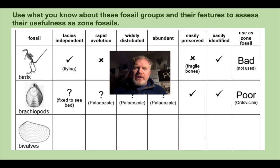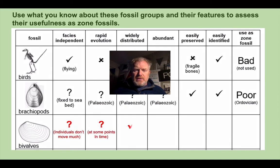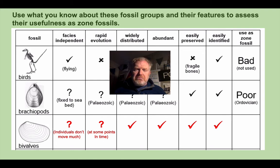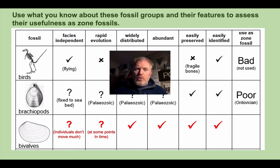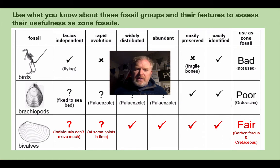Let's have a look at what I think about each of these groups. Starting with bivalves: they are a little bit facies independent — they do occur in lots of different environments, although individuals don't spread that much. They do, at some points in geological history, evolve rapidly. They are very widely distributed and very abundant. As a small invertebrate shellfish, they preserve easily and we can easily identify them. So for bivalves, they're actually fairly good, but really confined to specific periods — we use them in the Carboniferous and in the Cretaceous.